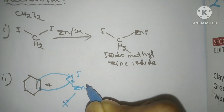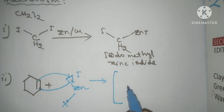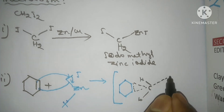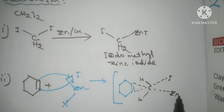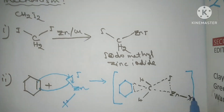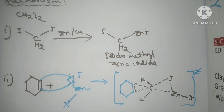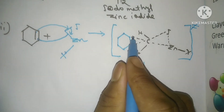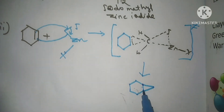What happens is this bond will go here, this will go here, and this will go here, forming a transition state. This is our transition state. The product is completely formed and this is our cyclopropane ring. So now we have learned the mechanism as well.